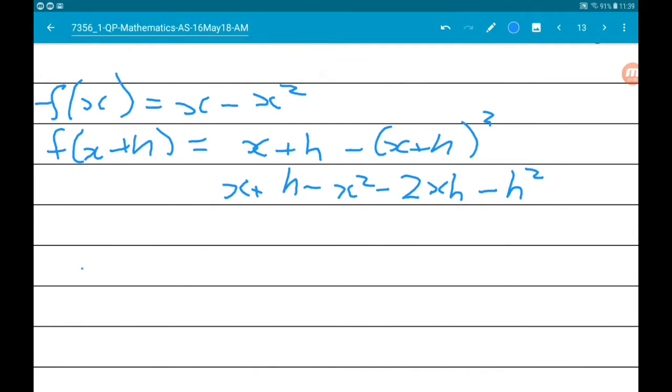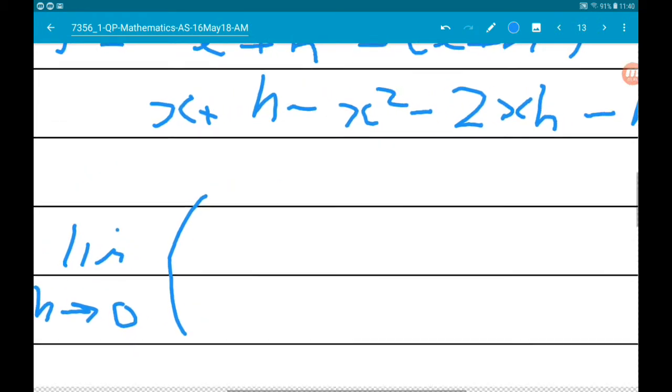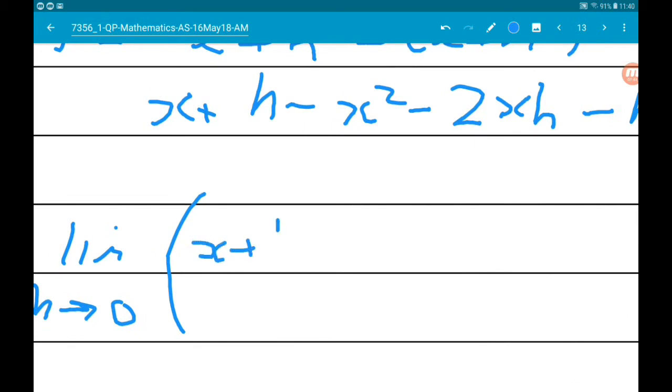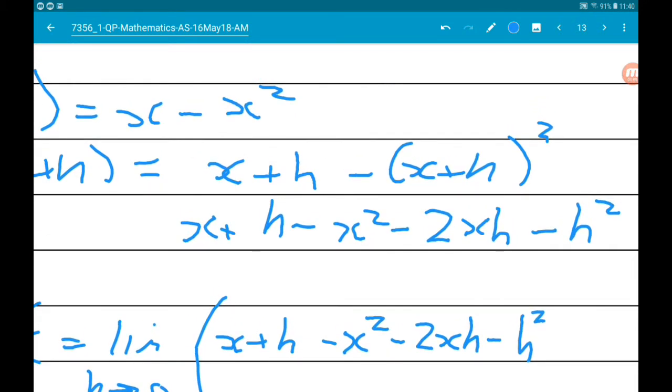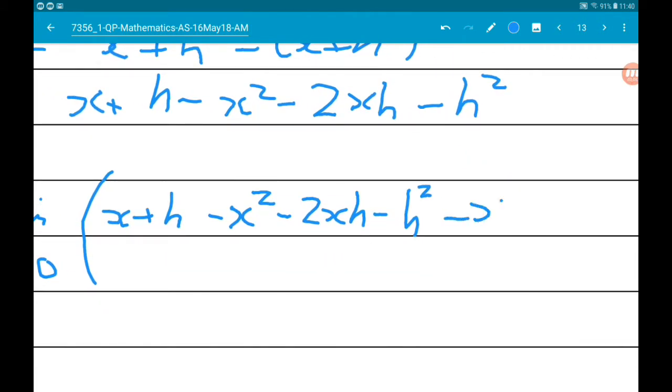We have x + h, then minus x² - 2xh - h². So df/dx is the limit as h tends to 0 of x + h - x² - 2xh - h² minus F(x), which is minus x plus x², all over h.